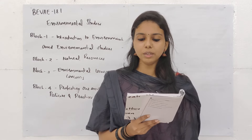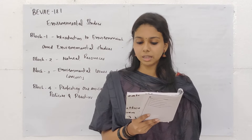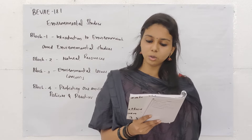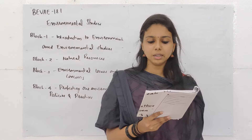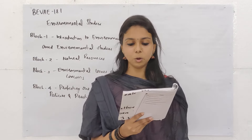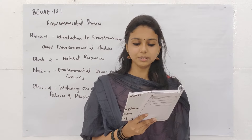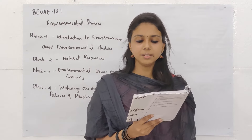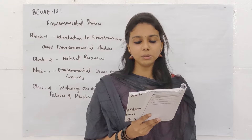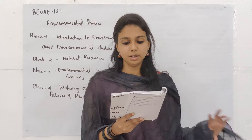Eighth question: Sulphates in water, acid rain, and fossil fuel are part of the what cycle? Options: A. Carbon cycle, B. Nitrogen cycle, C. Water cycle, D. Sedimentary cycle. Option A is the right answer — Carbon cycle.